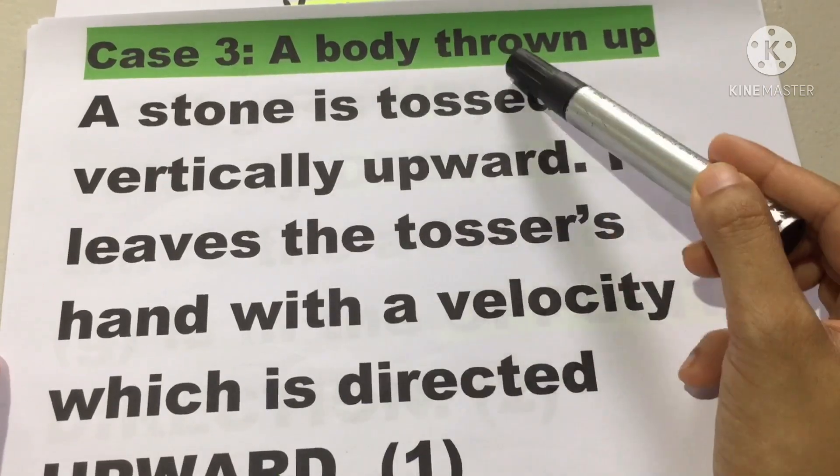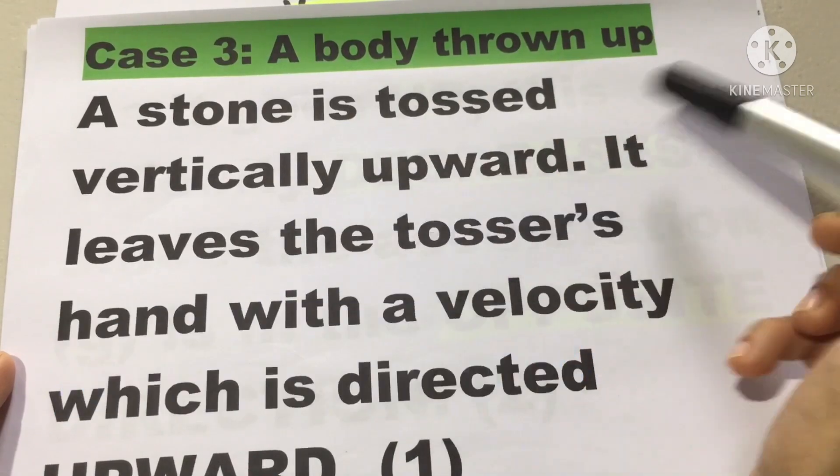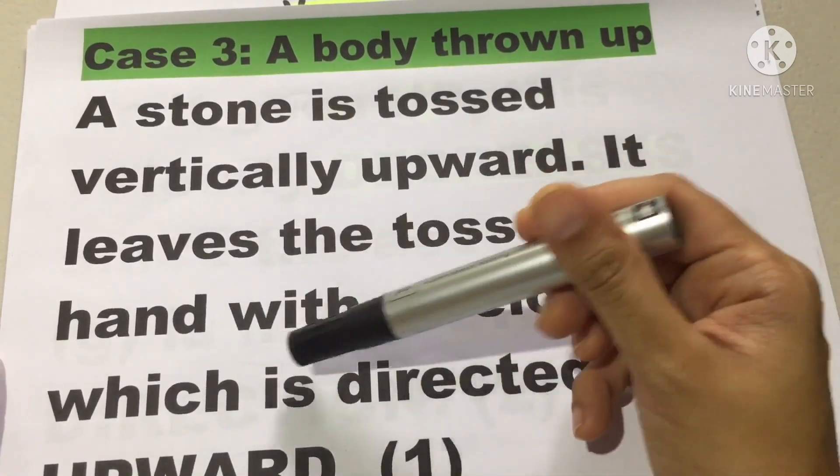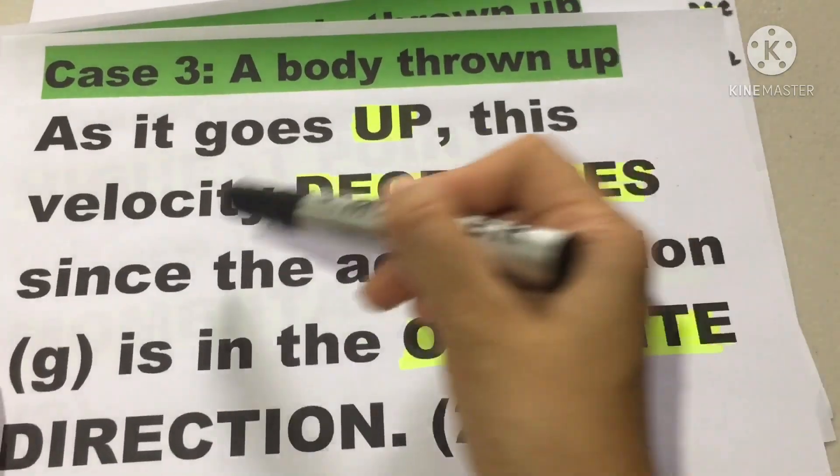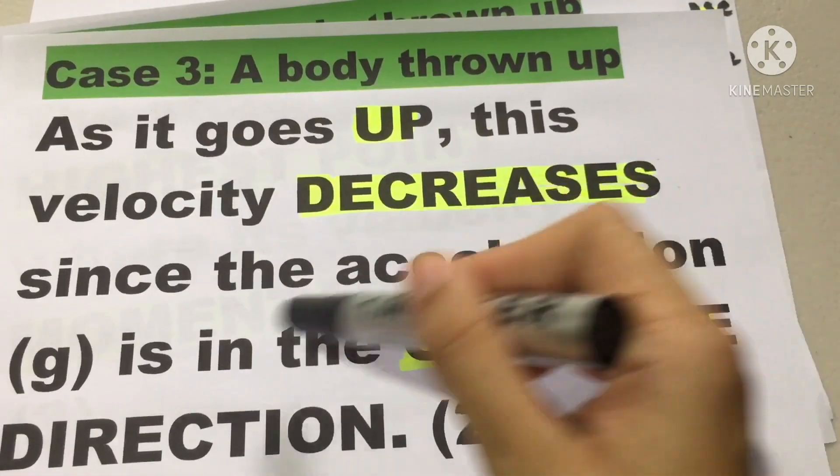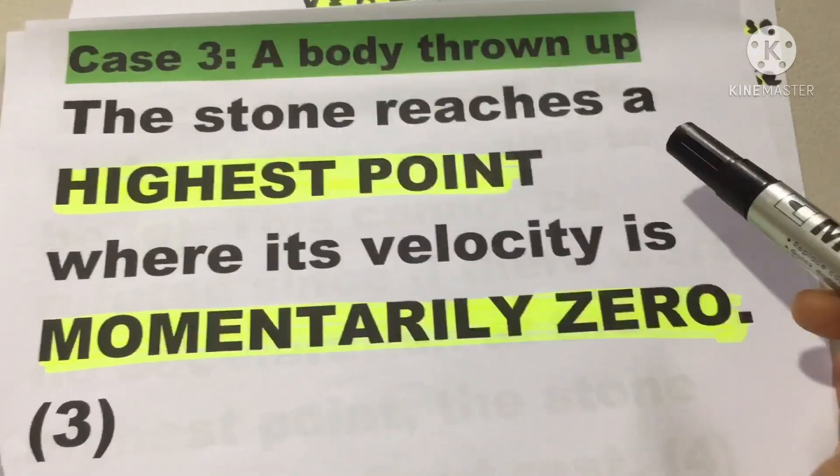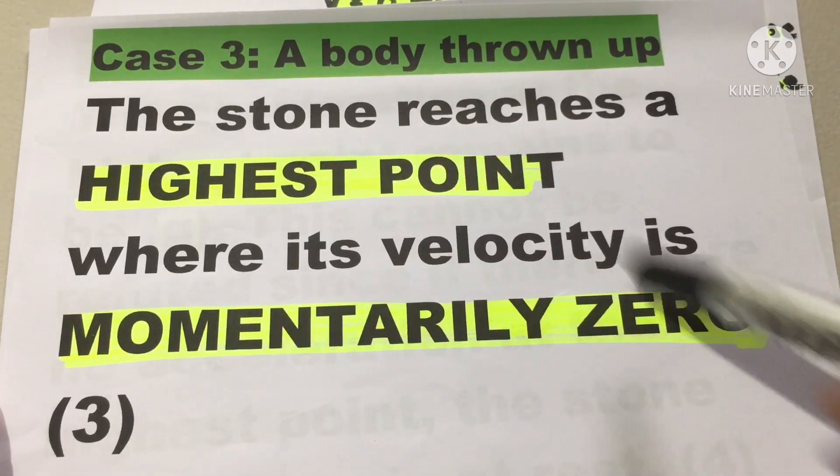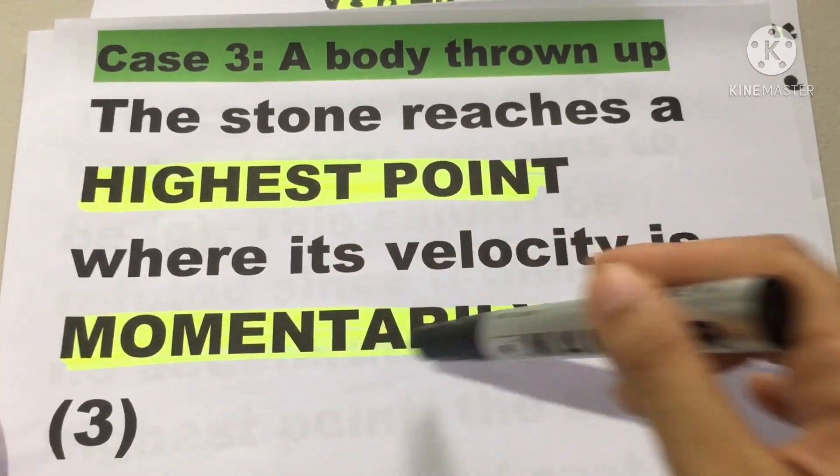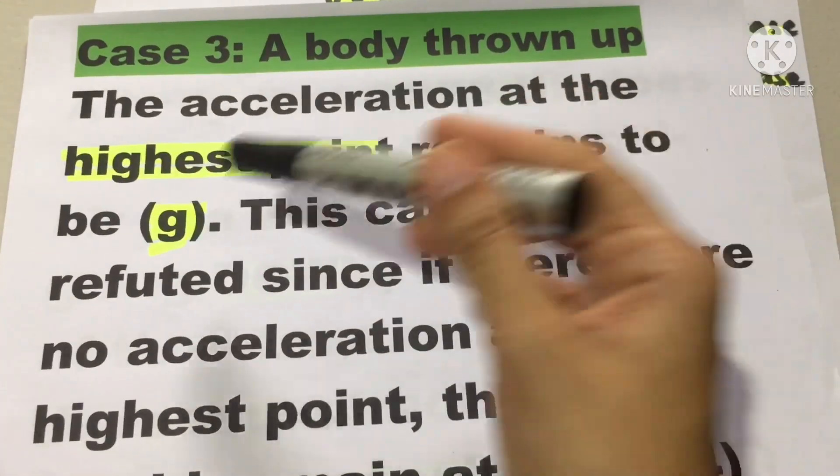Case number three, a body thrown up. The stone is tossed vertically upward. It leaves the thrower's hand with a velocity which is directed upward. As it goes up, this velocity decreases since the acceleration or gravity is in the opposite direction. And the stone reaches at the highest point where its velocity is momentarily zero.